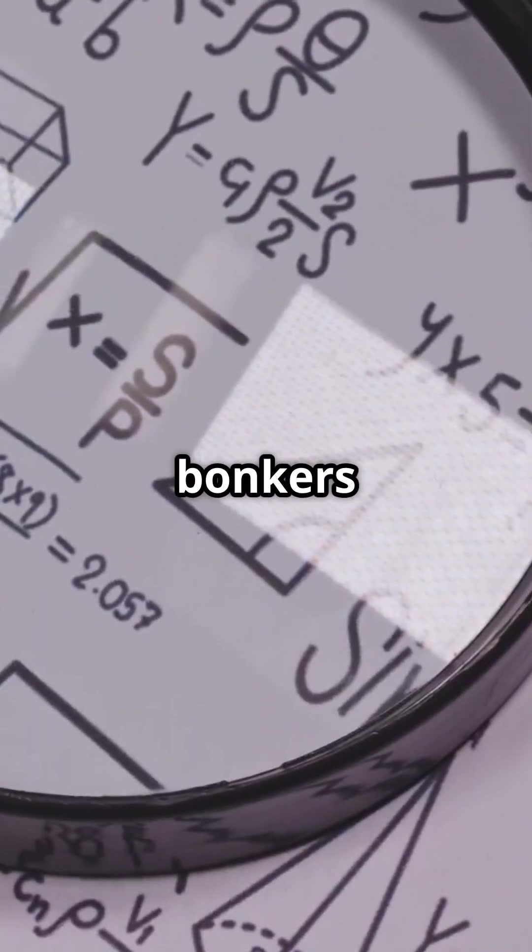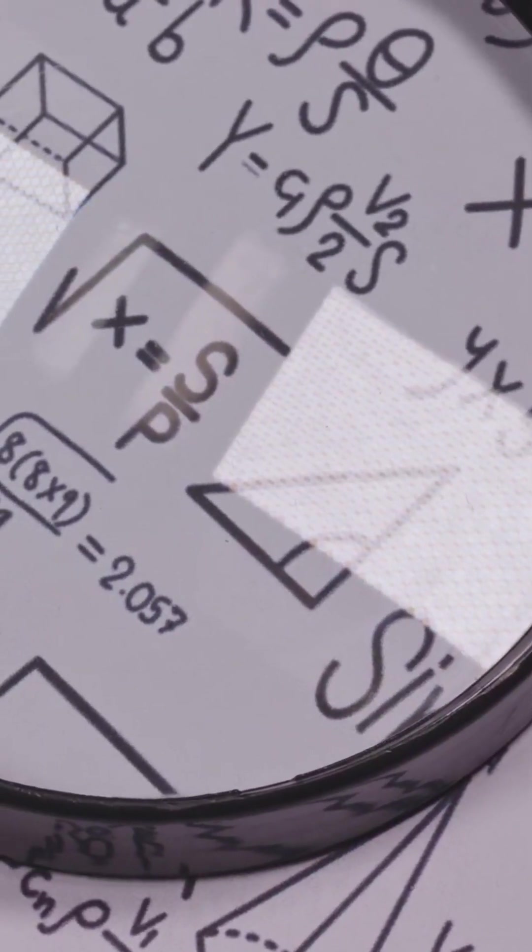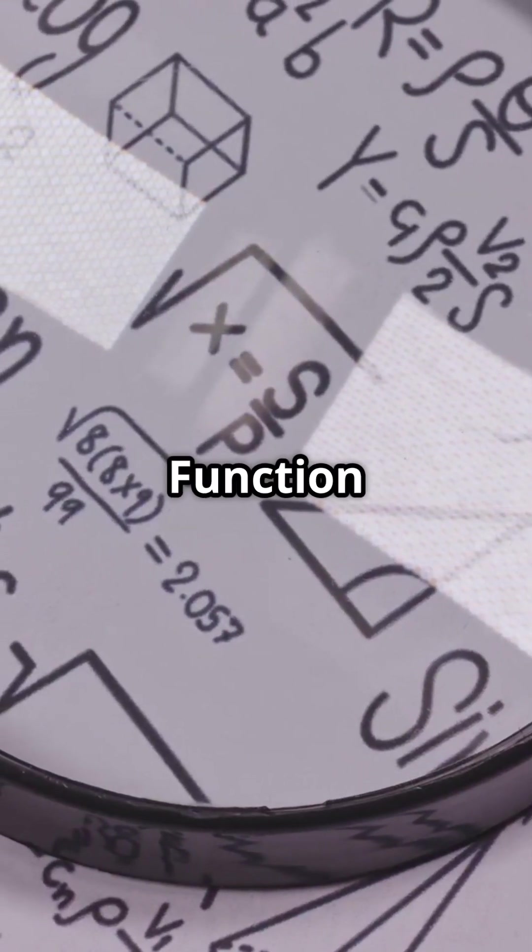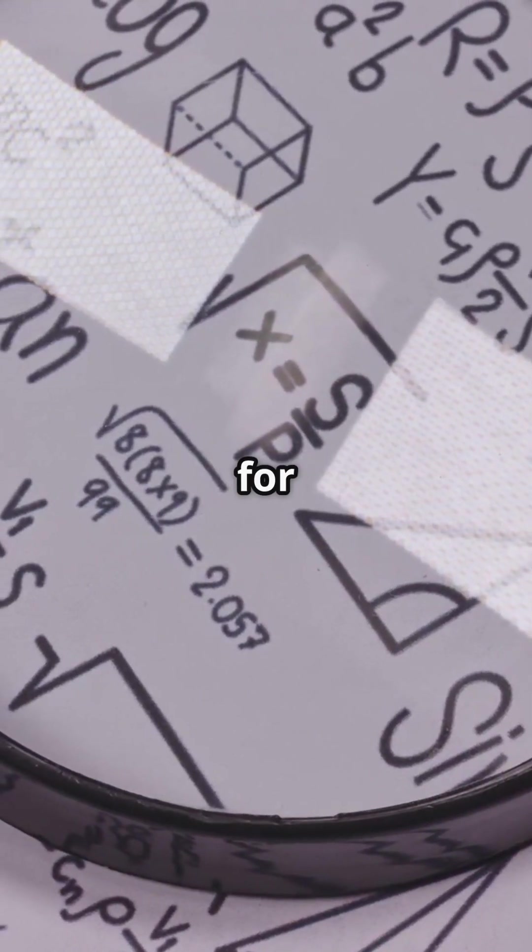Why do mathematicians go bonkers over prime numbers? It's all about the Riemann zeta function. The Riemann zeta function is like a magical detective tool for math.